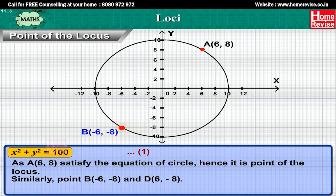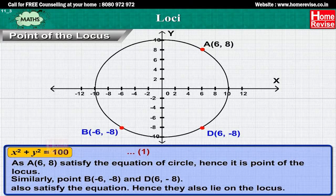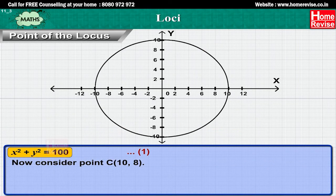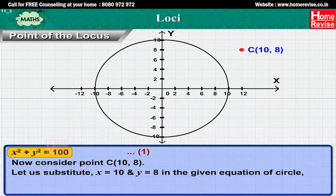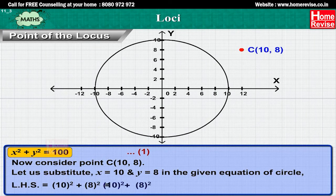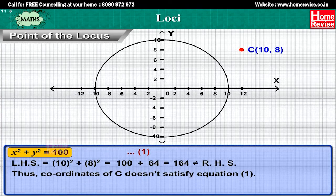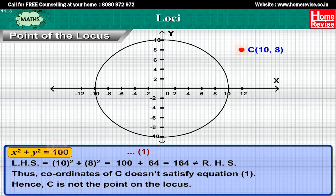Similarly, points B(−6, −8) and D(6, −8) also satisfy the equation, hence they also lie on the locus. Now consider point C(10, 8). Substituting x = 10 and y = 8, LHS = 10² + 8² = 100 + 64 = 164, which is not equal to RHS. Thus the coordinates of C do not satisfy equation 1, hence C is not a point on the locus.